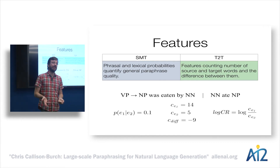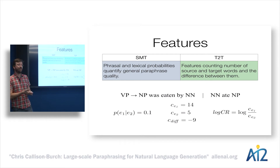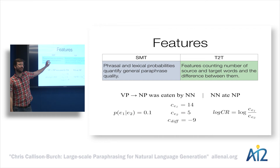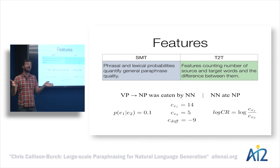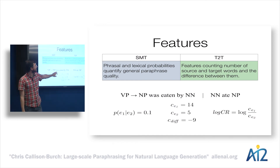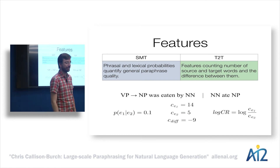Next, the features that underlie the model. In statistical machine translation we have a phrase translation probability and a lexical translation probability, which quantify the goodness of a translation. We can pull those out and use the corresponding paraphrase probability. But we also want to add features that model the specific task we're interested in — so we insert features that count the lengths of the output and the ratios of input to output. For a rule, it's not only going to have a paraphrase probability, but also corresponding counts and compression ratios that help guide the model to pick shorter rules.